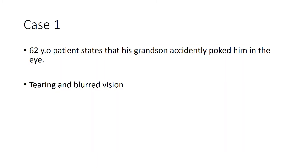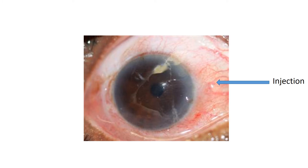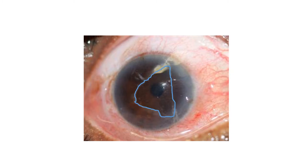Case number one: a 62-year-old patient states that his grandson accidentally poked him in the eye. He has tearing and blurred vision. Here is a picture of our patient. We see that the eye is red — this is what we call injection. We also notice a large irregular area on the superficial cornea, and if we draw on that, it would look like this. This would be an example of a corneal abrasion.